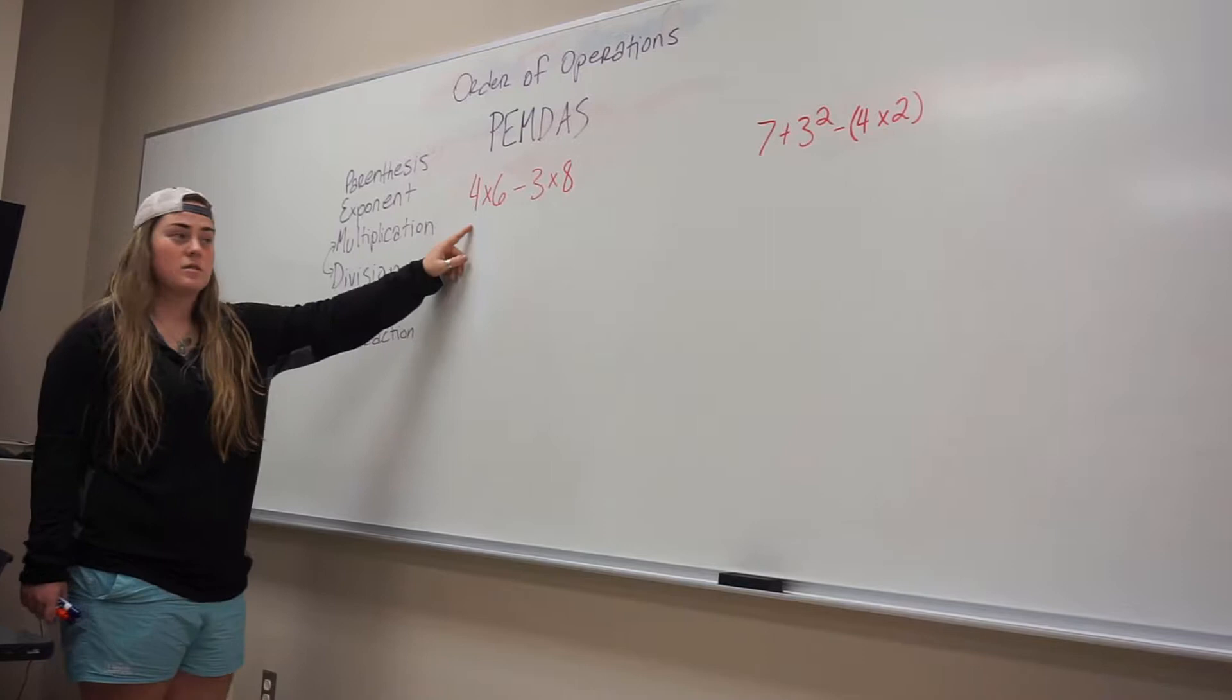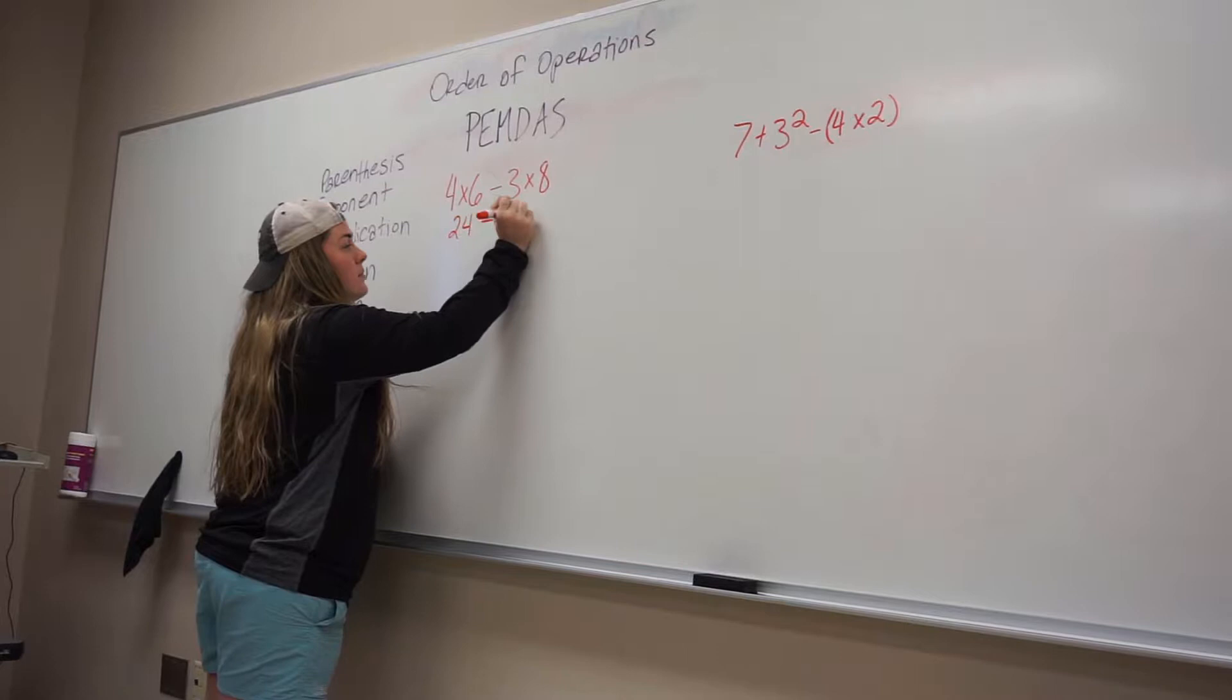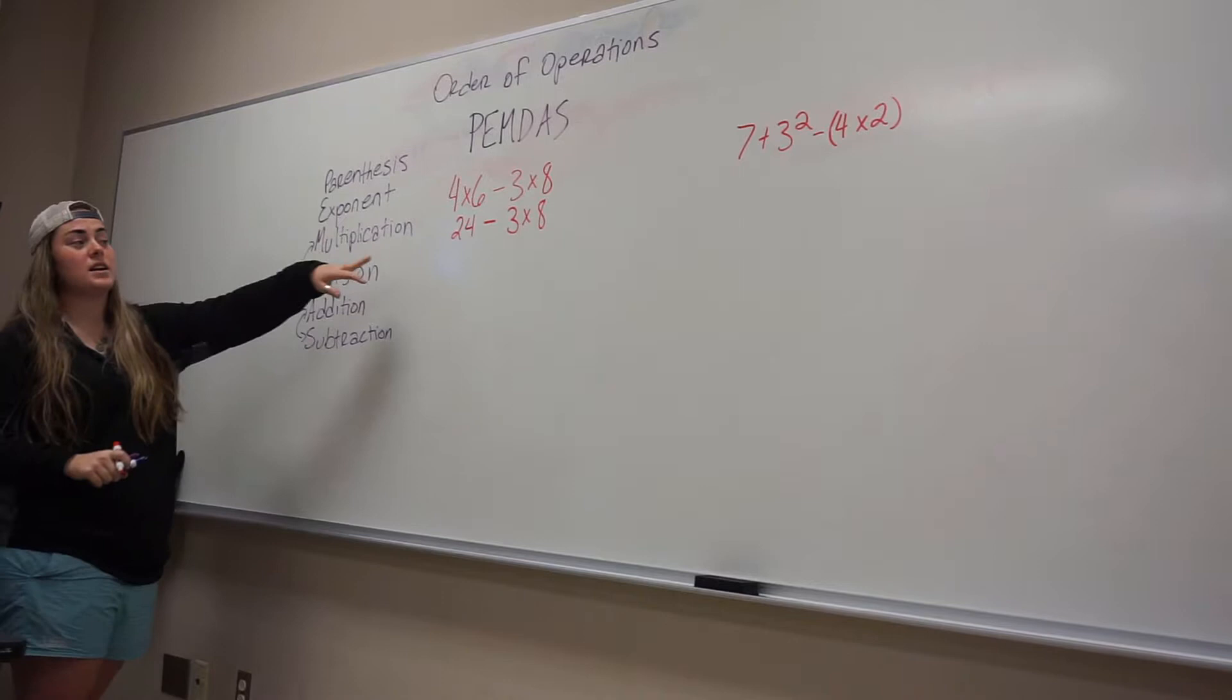What do we know? Four times six is 24. All right, and then we're going to write the rest of the problem after that. Then we're going to go through the problem again and we'll start with parentheses.